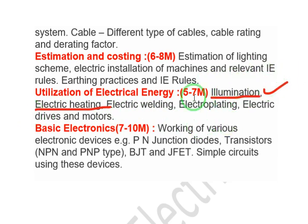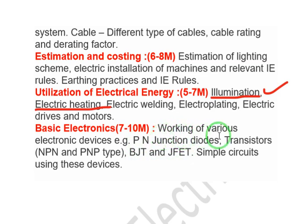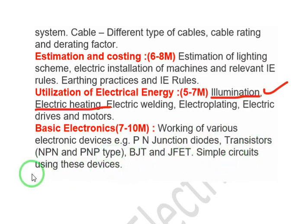Basic Electronics carries 7 to 10 marks and sometimes varies. Topics include the working of various electronic devices: P-N junction diodes, transistors (NPN and PNP type), BJT, JFET, and simple circuits using these devices. This completes the SSC JE Electrical examination syllabus.